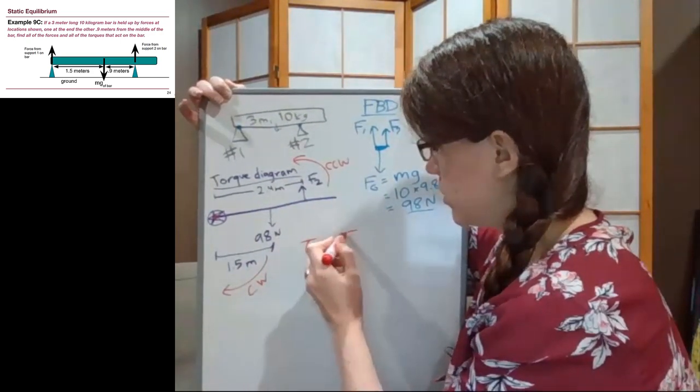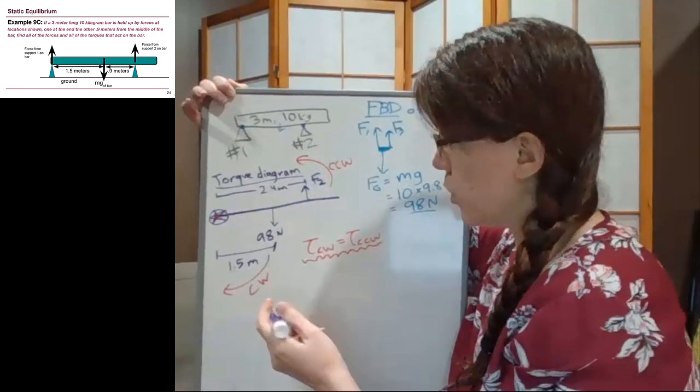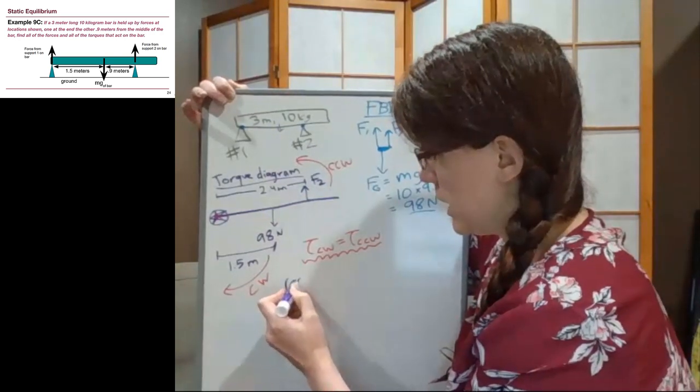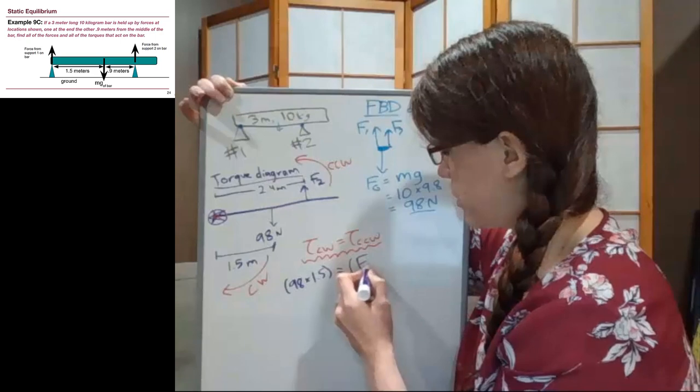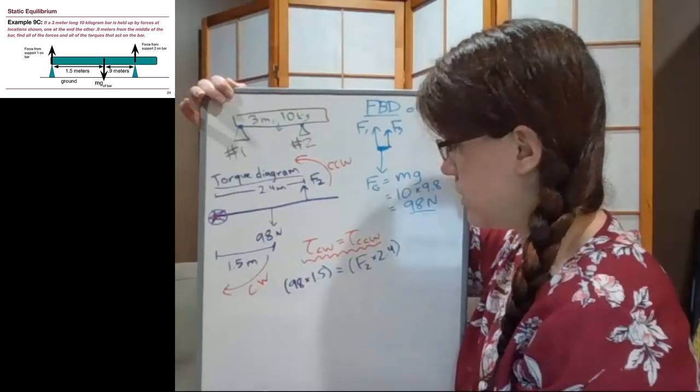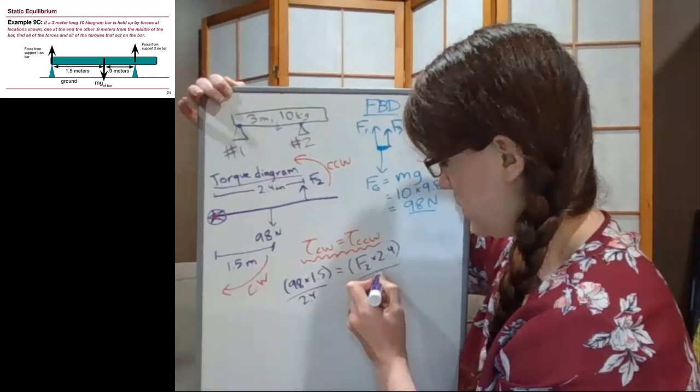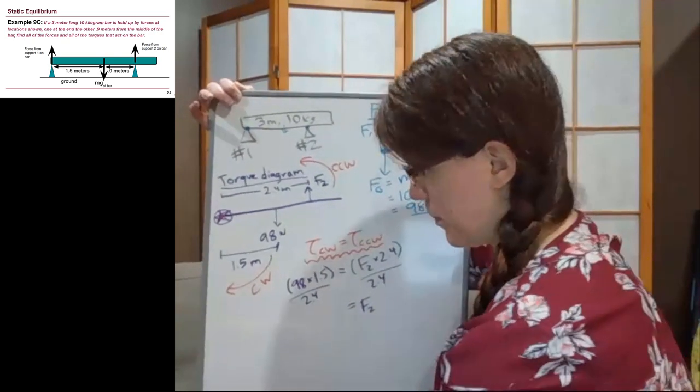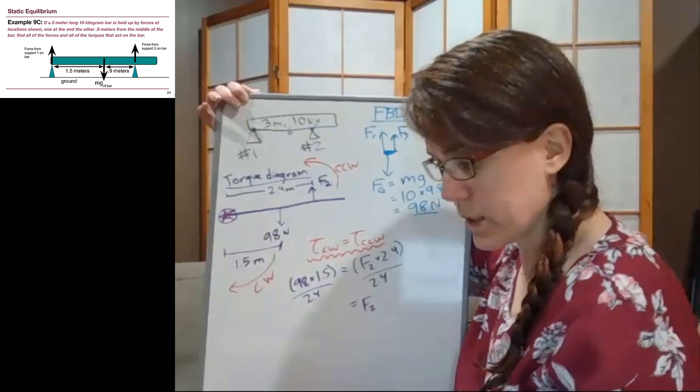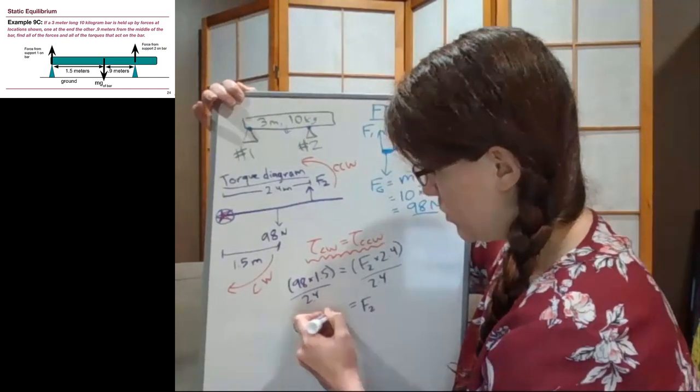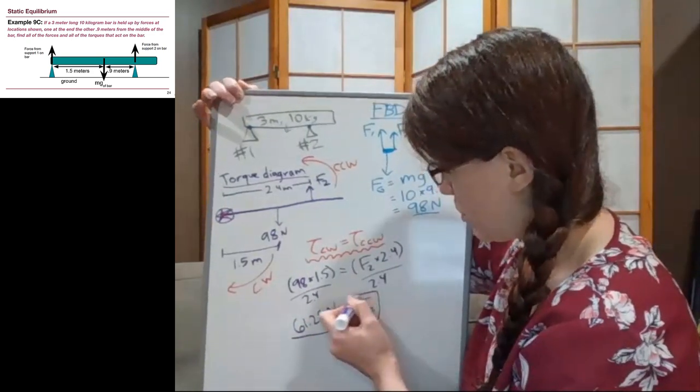So torques clockwise equal torques counterclockwise. That's one of the two equations for equilibria. And so there's only one clockwise torque here, so force 98 times distance 1.5. And there's only one counterclockwise torque here, our unknown support 2 force times the distance 2.4 that it is. And the only step of math that we have to do at this point in the problem is divide both sides by 2.4. So our unknown support number 2, we take 98 times 1.5 divided by 2.4, and we get 61.25 newtons. We can round that to 61 newtons if we want to, 61.2, 61.3, any of those numbers are going to be fine. But that's our support number 2 force.